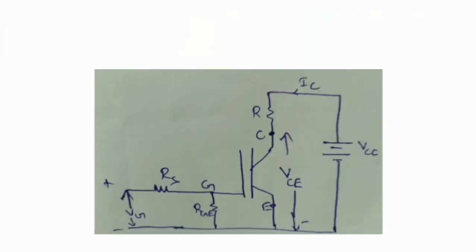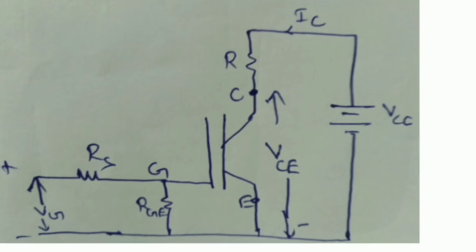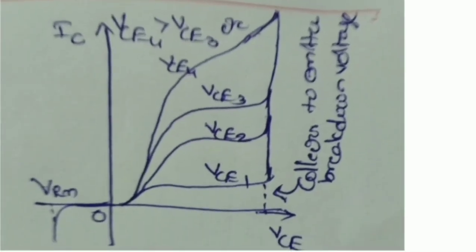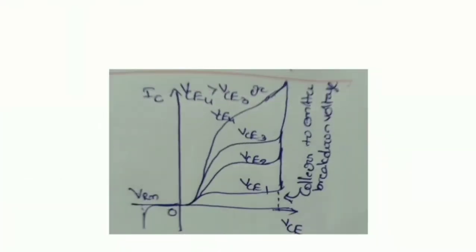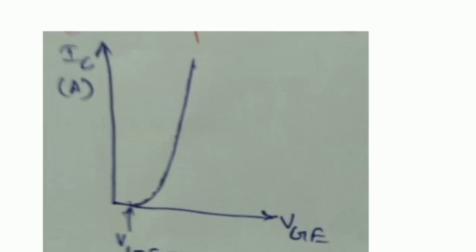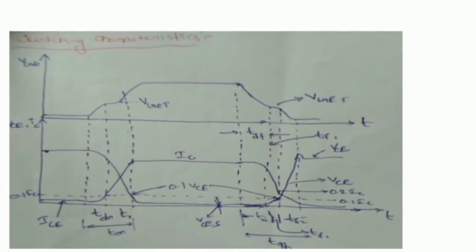The basic circuit diagram of the IGBT shows the static IV characteristics between collector current and collector-to-emitter voltage. The switching characteristics of the IGBT are also observed here, similar to those of the power MOSFET.